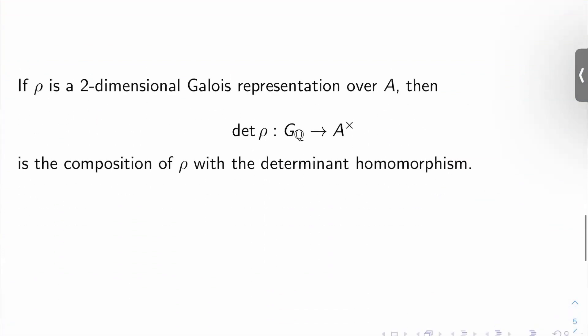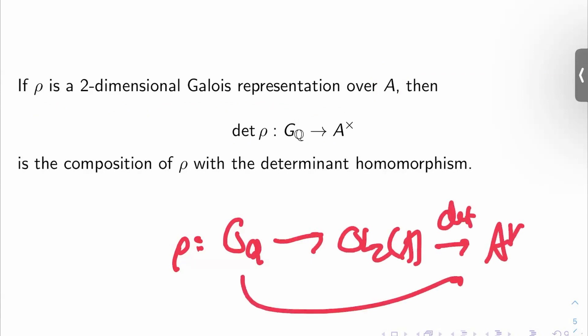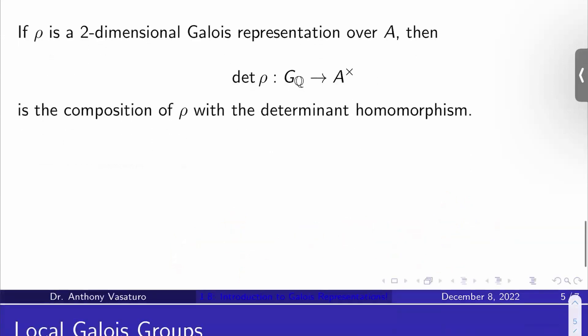How about the determinant of a Galois representation? If rho is a two-dimensional Galois representation over A, then det rho from G_Q to A^× is just the composition of rho from G_Q to GL_2(A) with the determinant homomorphism. So that's called det of rho.